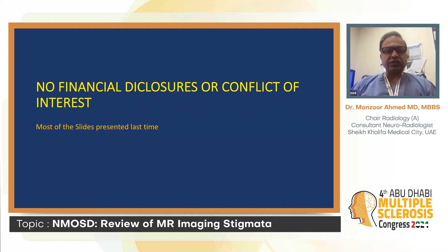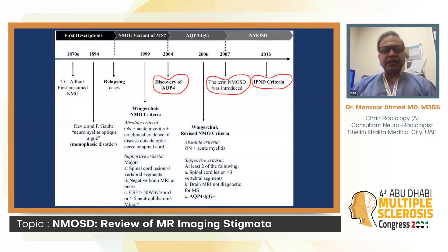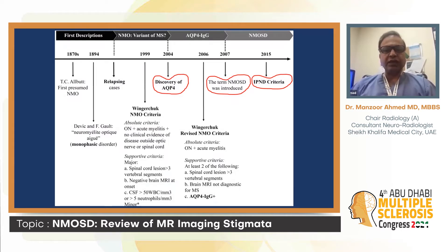I have no financial disclosures or conflict of interest. Most of the slides, as you can imagine, were presented previously with some modifications. So let's go back in history and the timeline. It dates back to probably the 19th century, and then fast forward to 2004 we had the discovery of aquaporin-4, and it changed a lot. Then we had the term NMOSD coined in 2007, and then came the IPND criteria.